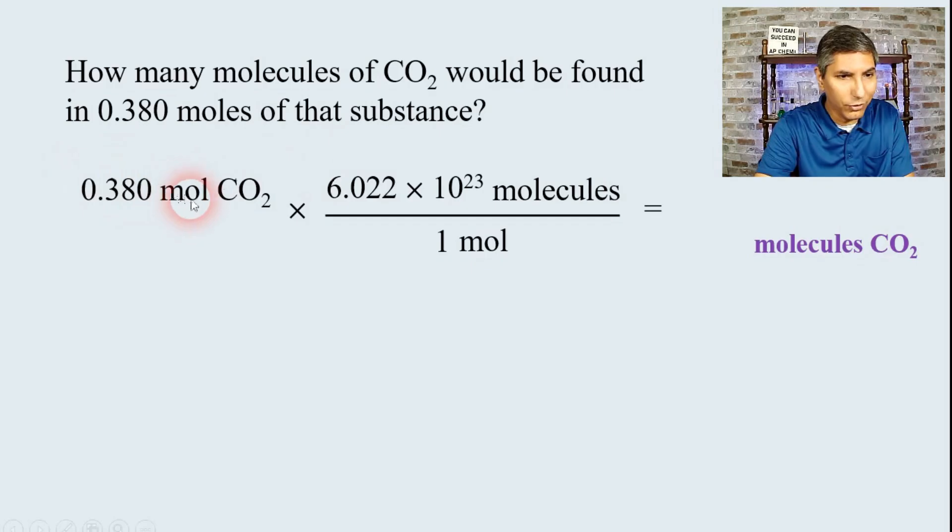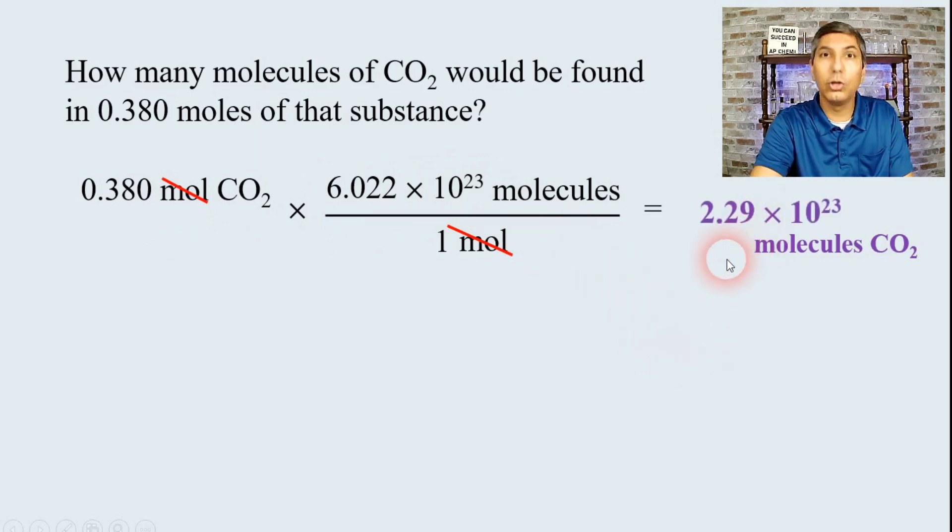So now, all we have to do is cancel moles, top and bottom, just like this. And on our calculator, we can take 0.380 and multiply this by 6.022 times 10 to the 23rd. And when you key that into your calculator, the answer is 2.29 times 10 to the 23rd. So that's how we can solve a problem like this.